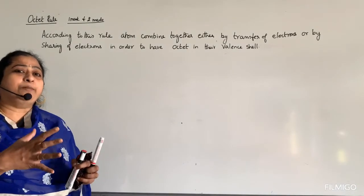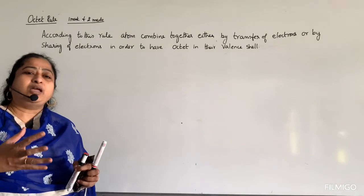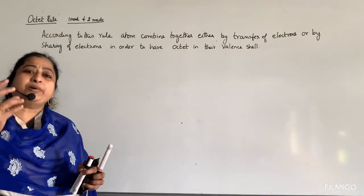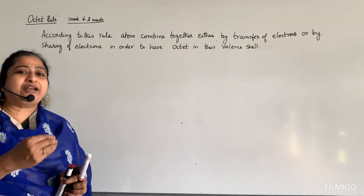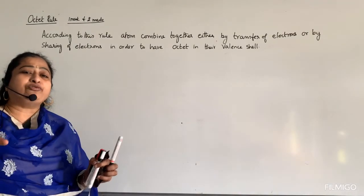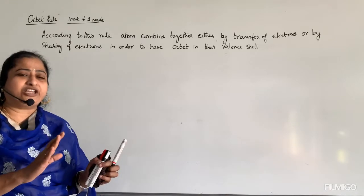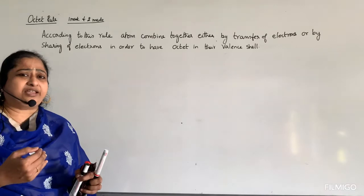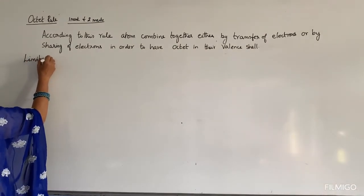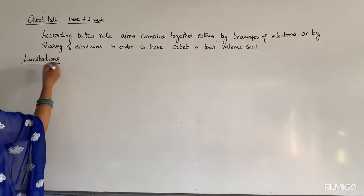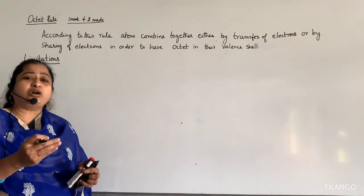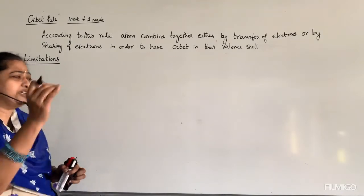When many compounds were found, it was observed that some compounds do not have 8 electrons in the outermost shell, but still have high stability. So there are limitations — this octet rule does not apply to all compounds. There are some exceptions. These limitations are also asked in 2-mark questions.